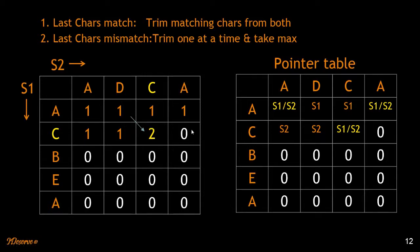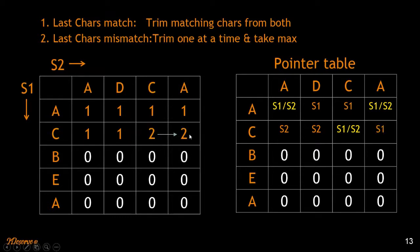Moving to the next column: A and C do not match. We leave out A and take LCS of AC and ADC, which is 2. If we leave out C, LCS of A and ADCA is 1. The maximum is 2, so we move 2 here. This is the procedure we follow until we find the longest common subsequence, and at the end we see that the length of the longest common subsequence is 3.